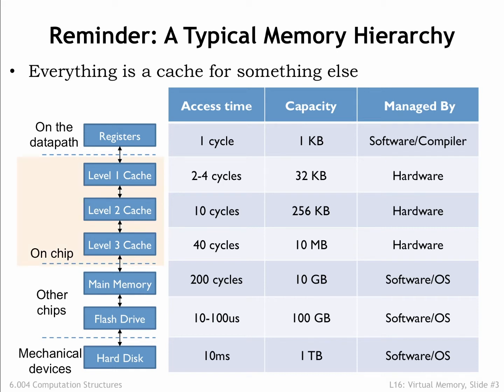The cleverness is embodied in the cache, a hardware subsystem that lives between the CPU and main memory. Modern CPUs have several levels of cache, where the modest capacity first level has an access time close to that of the CPU, and higher levels of cache have slower access times but larger capacities.